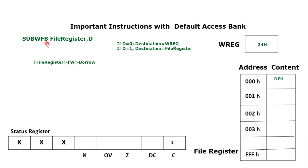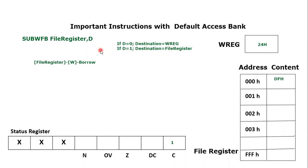The keyword SUBWFB stands for subtraction working file borrow. After the keyword we mention the file register, then comma and the destination bit d. If d is equal to 0, the destination is the working register, and if d is equal to 1, the destination is the file register.